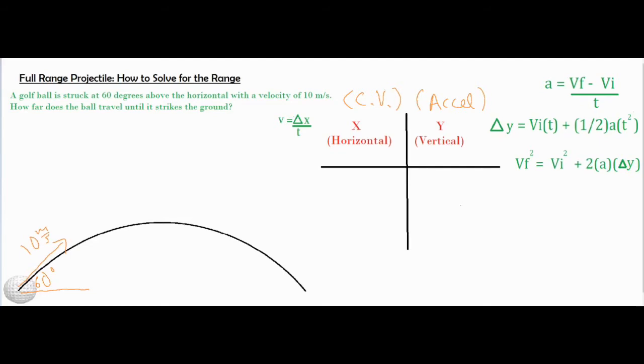That 10 meters per second doesn't fit in the horizontal or vertical column, so we want to make sure we split it up into two components, which we can call the VX and the VY. We're going to use a couple trig functions and solve for our VX and VY before we get started in labeling variables and plugging stuff in.